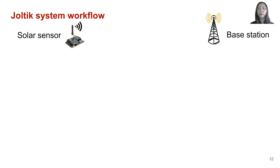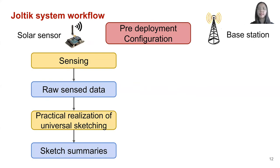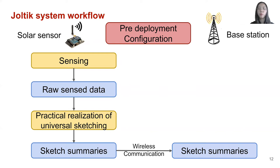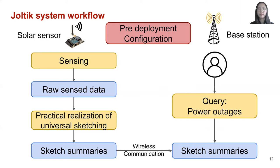Here is the workflow of JOTIC's system. Let's consider JOTIC working in the solar farm example. Before deployment, JOTIC will run an automatic configuration process to determine sketch-related parameters based on user's requirements. During runtime, the solar sensor will run a practical realization of the universal sketching algorithm and generate sketch summaries from raw sensed data. The sketch summaries are then transmitted to the base station through wireless communication, and the user can then query different statistics — for example, energy generated, power outage, and weather events. If the user later realizes some new statistics of interest, the user can get the estimation right away at the base station, without the need to communicate with the solar sensor again.